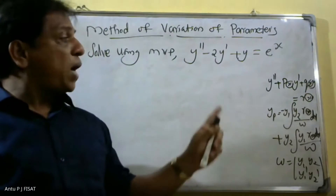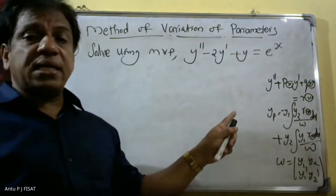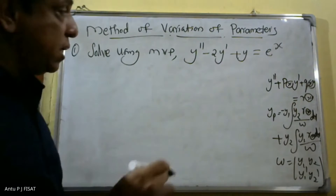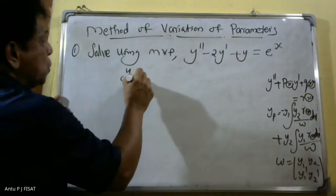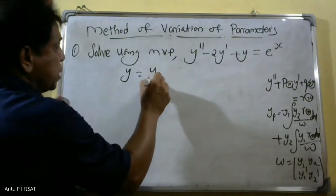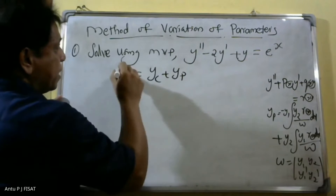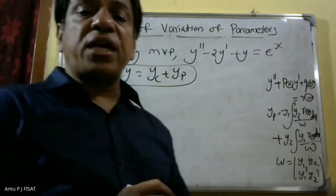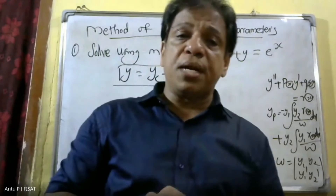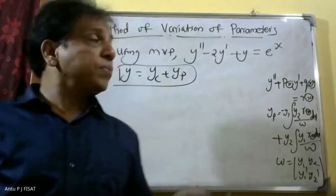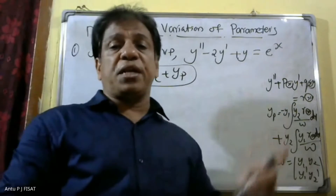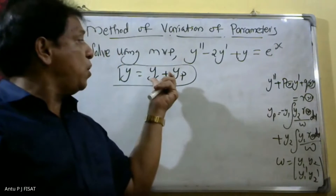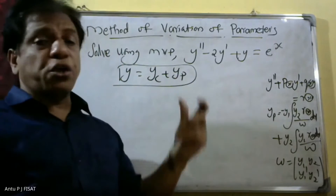To find the solution, we have two parts: y is equal to y_c plus y_p. This is the total solution. First we find out the complementary function y_c, then second we find out the particular integral y_p, and the total solution will be y_c plus y_p.